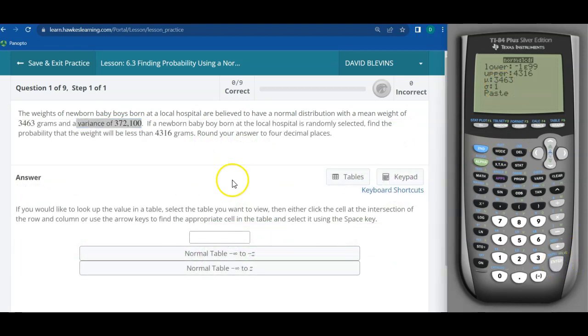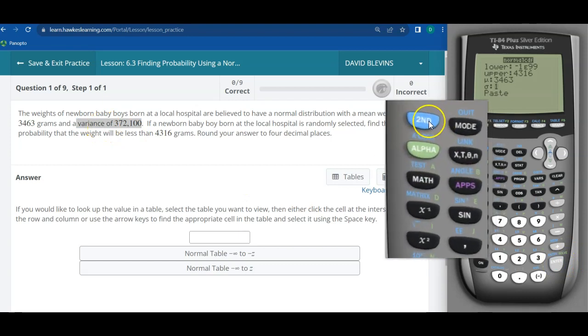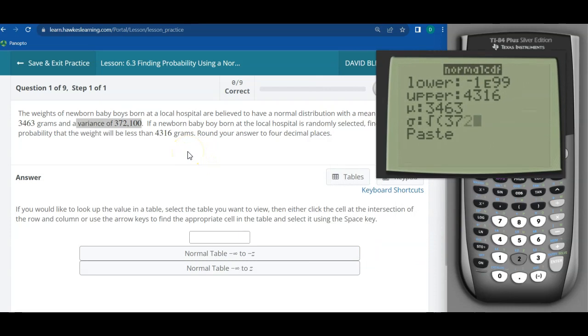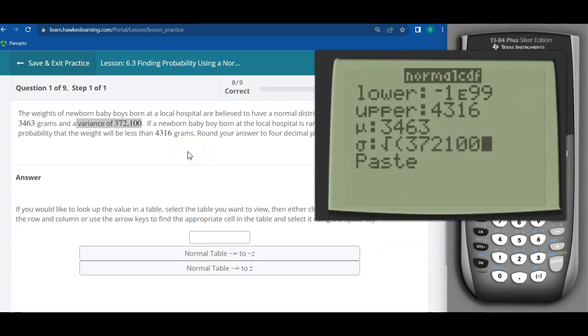So I need to take the square root of this number and to do that you can actually do it within the calculator. Just press second, the x squared button. If you look, there's the root symbol and then you type in the variance, 372,100. I'm going to close that parentheses and then I'm going to go down to paste.